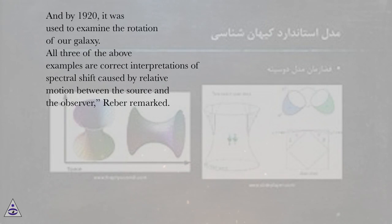All three of the above examples are correct interpretations of spectral shift caused by relative motion between the source and the observer, Raber remarked.